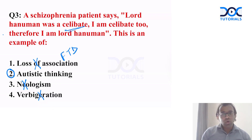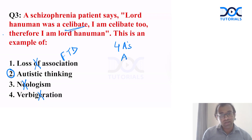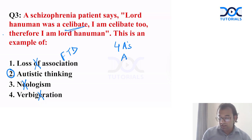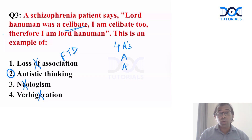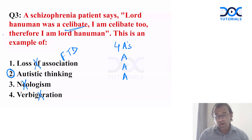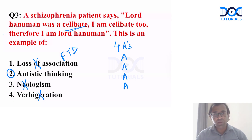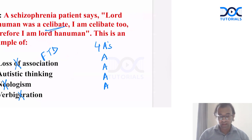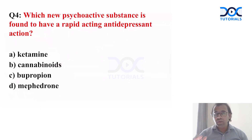Even in schizophrenia, we have learned about Bleuler's four A's: A for autism — socially withdrawn and autistic/fantasy-type thinking; second A for ambivalence — where a person cannot decide what to do; A for affective flattening or affective disturbances; and A for association disturbances. So the answer is autistic type of thinking.